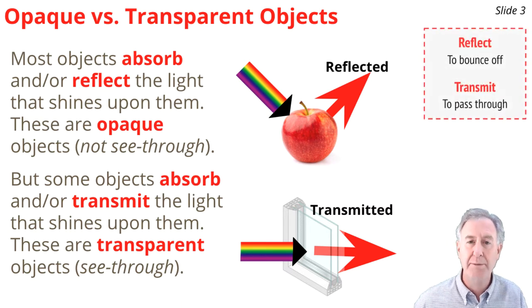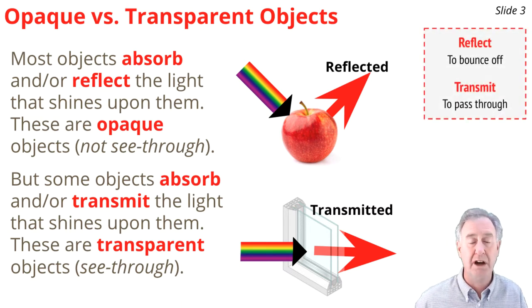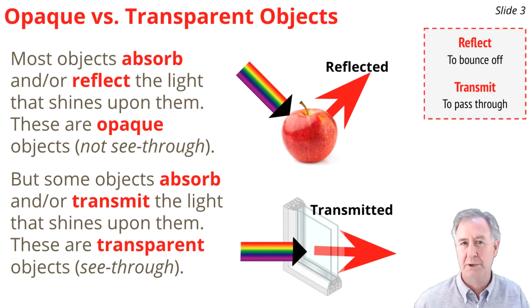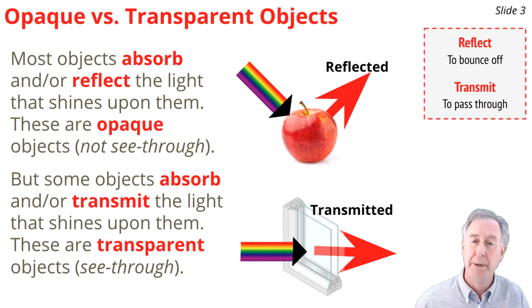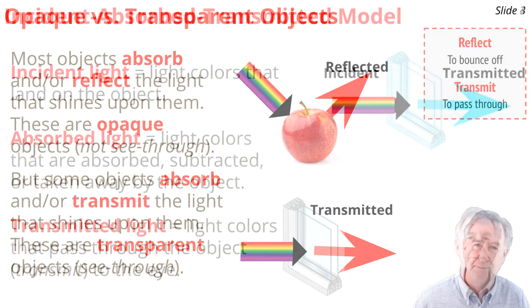There are two vocabulary words here. First, reflect, which means bounce off. And then, kind of a new one to us in this unit, the idea of transmission or transmit, which means to pass through.